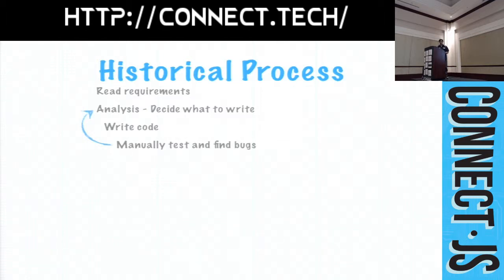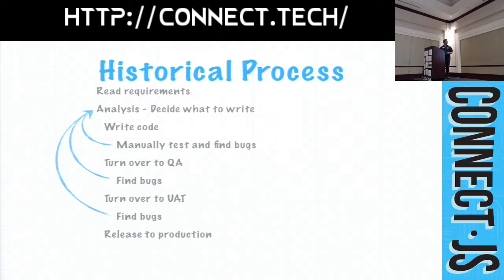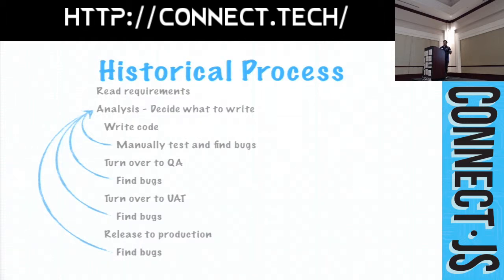This is a feedback loop, and we'll look at how to reduce these. Once you've done your test, you turn it over to QA, they find bugs, it goes back to you for analysis and fixing until you're ready to return to QA again. Then you get to user acceptance testing, they find bugs, and it goes back through. Eventually, you release it to production where people find bugs and you go back to the beginning. It's a little depressing when you look at it like that.